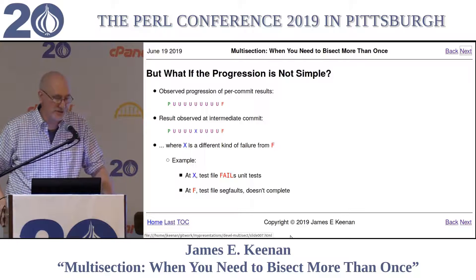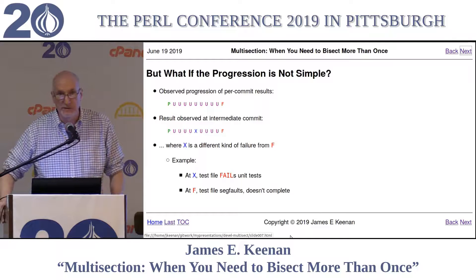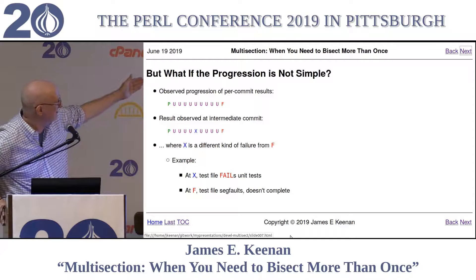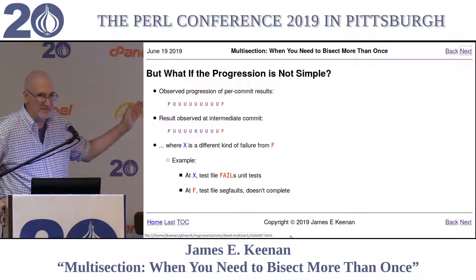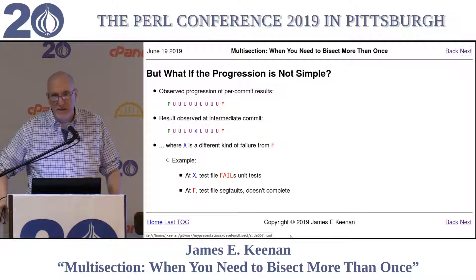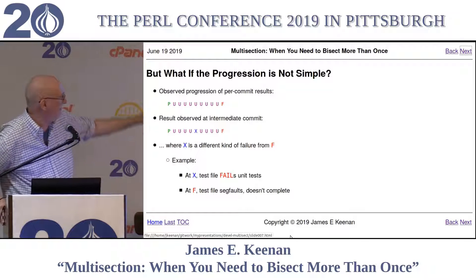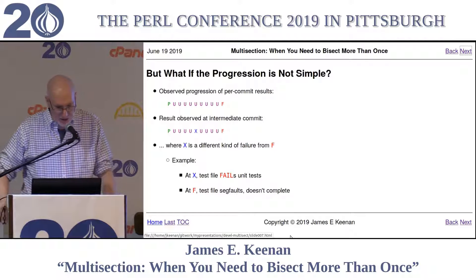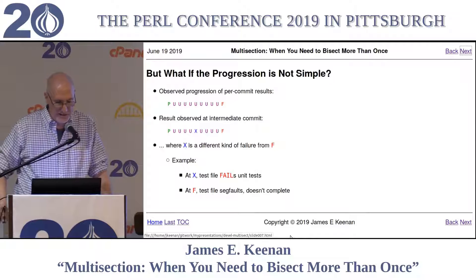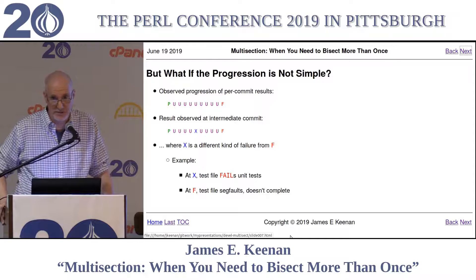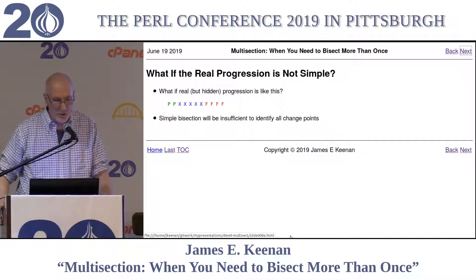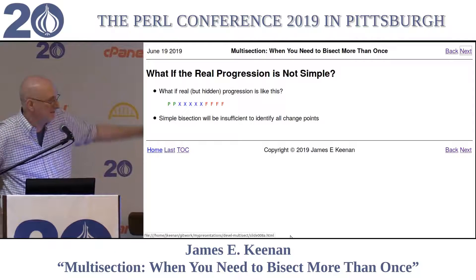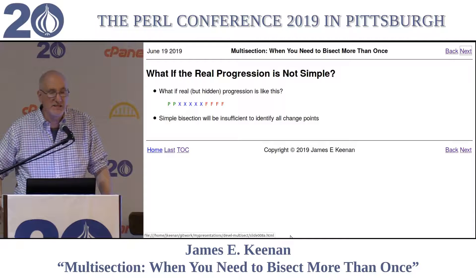But what if the progression is not so simple? Suppose we observe a progression: P, a series of unknowns, then F for failure — but in the middle of this series of commits, at X, we have a failure that is not necessarily the same type as F. Suppose X is a different kind of failure: at X, the test file simply fails some unit tests, whereas at F, the test file segfaults and doesn't even run to completion. Simple bisection will be insufficient to identify all the change points.